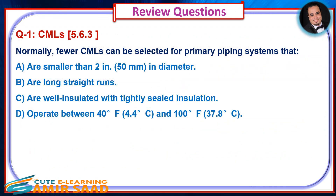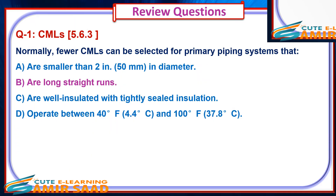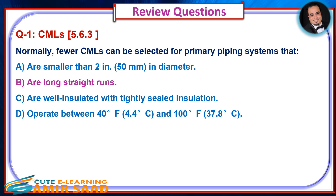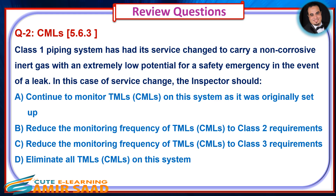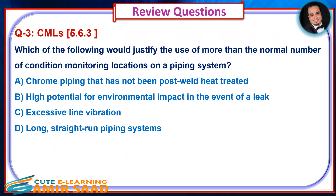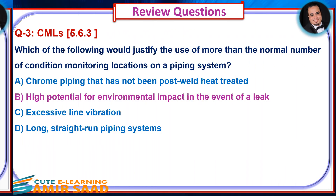Review questions: Question 1 — Normally, fewer CMLs can be selected for piping systems that... Answer is B. Question 2 — A Class 1 piping system has had its service changed to carry a non-corrosive inert gas with an extremely low potential for a safety emergency in the event of a leak. In this case of service change, the inspector should... Answer is D. Question 3 — Which of the following would justify the use of more than the normal number of condition monitoring locations on a piping system? Answer is B.